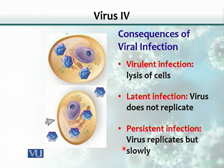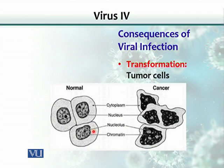Another form of CPE is persistent infection, where the virus replicates but at a slow rate. The cell does not get killed completely, but virus particles are being released, although slowly — the rate of release is lower. Another form of CPE is transformation, where viruses act as a causative agent of tumors and cancers, changing the cell so that it starts replicating itself and assumes cancerous characteristics.